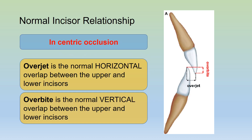Now, what is a normal incisor relationship? In centric occlusion there is a normal horizontal overlap between the upper and lower incisors, with the upper incisors in front of the lower incisors, and this is referred to as the overjet. There is also a vertical overlap between the upper and lower incisors, and this is known as the overbite.